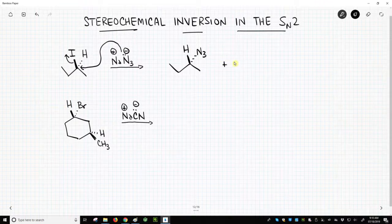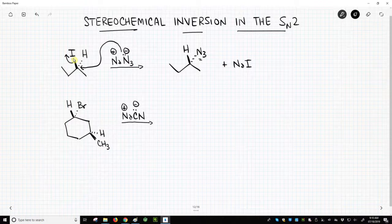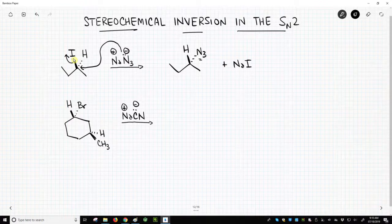If you want to keep track of it, there's sodium iodide. And so you can see our nucleophile is now on the back face where the leaving group was on the top face. So we get inversion of stereochemistry, and this always occurs in an SN2 reaction.